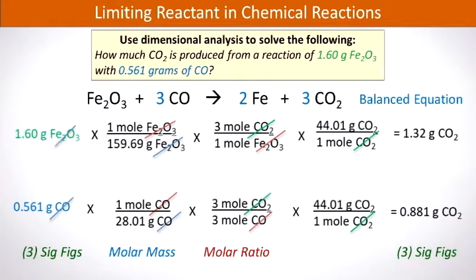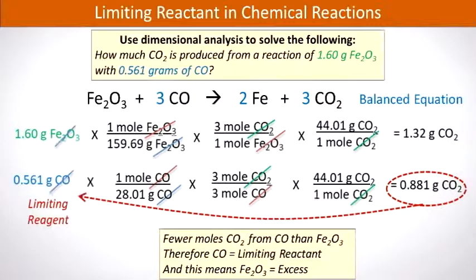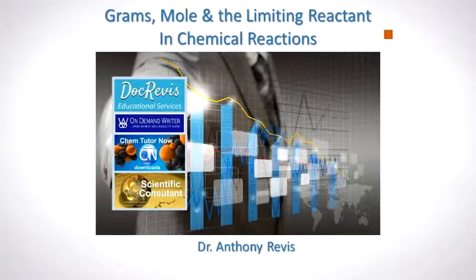We then carry out a similar conversion starting with 0.561 grams of carbon monoxide. We use the molar mass of 28.01 grams per mole of carbon monoxide, then apply the mole ratio from the balanced equation — 3 to 3, or 1 to 1 — and convert moles to grams, obtaining 0.881 grams of carbon dioxide, 3 sig figs. Since we get less carbon dioxide from the carbon monoxide, carbon monoxide is the limiting reactant. There you have it — how to determine the limiting reactant from grams and moles.